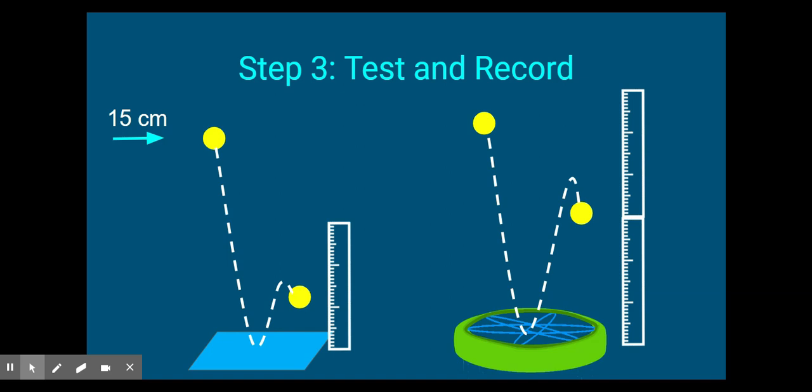First, drop your object onto the ground and measure how high it bounces back up, if it even does. Then drop it onto your device and measure how high it bounces from your device. Remember to drop it from the same height each time, such as from 15 centimeters.